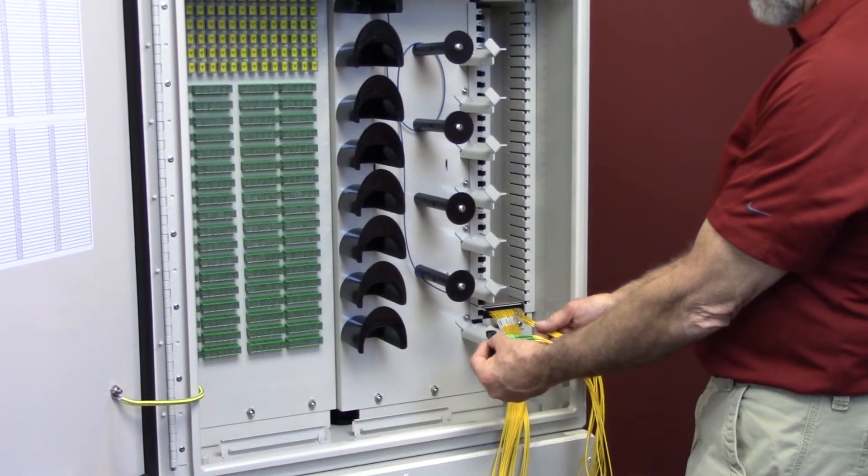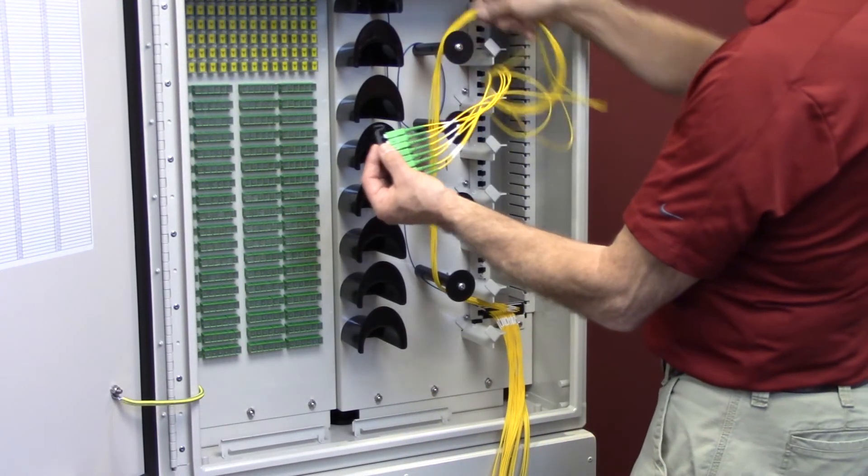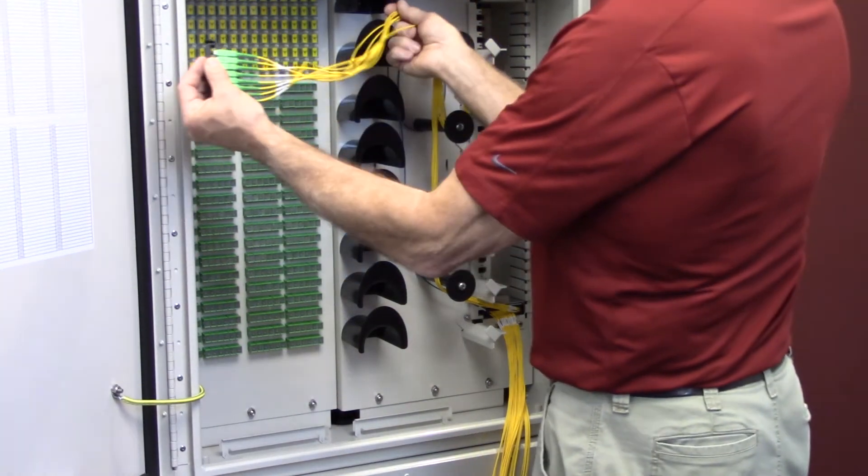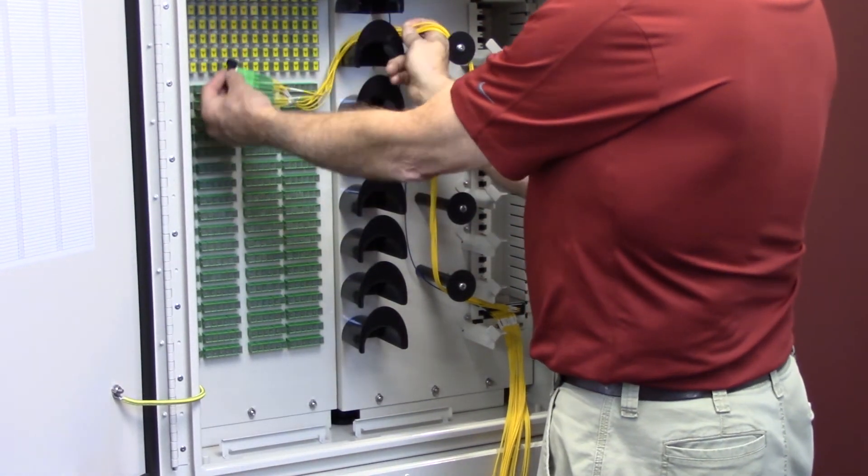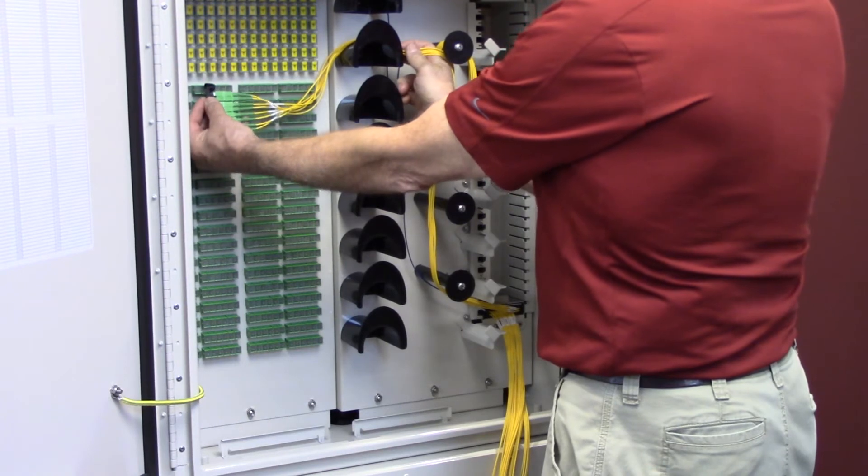Now route the splitter tail outputs around the fiber slack spools and over the fiber bend control. Plug each of the splitter output connectors into the distribution adapters.